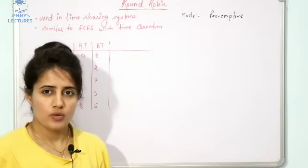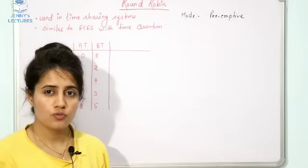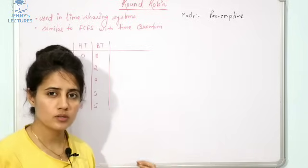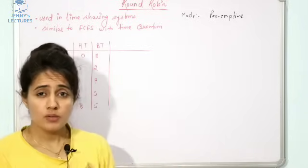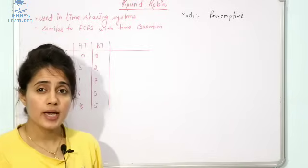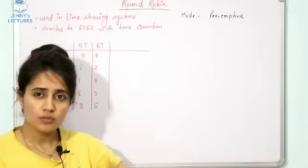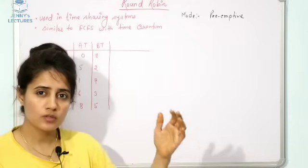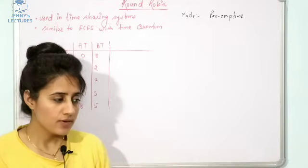The topic is Round Robin scheduling algorithm. We'll discuss the theory with two or three important points, and then work through a numerical example. This type of scheduling algorithm is used in multitasking operating systems, also called time sharing operating systems — a type we have discussed in a previous video.